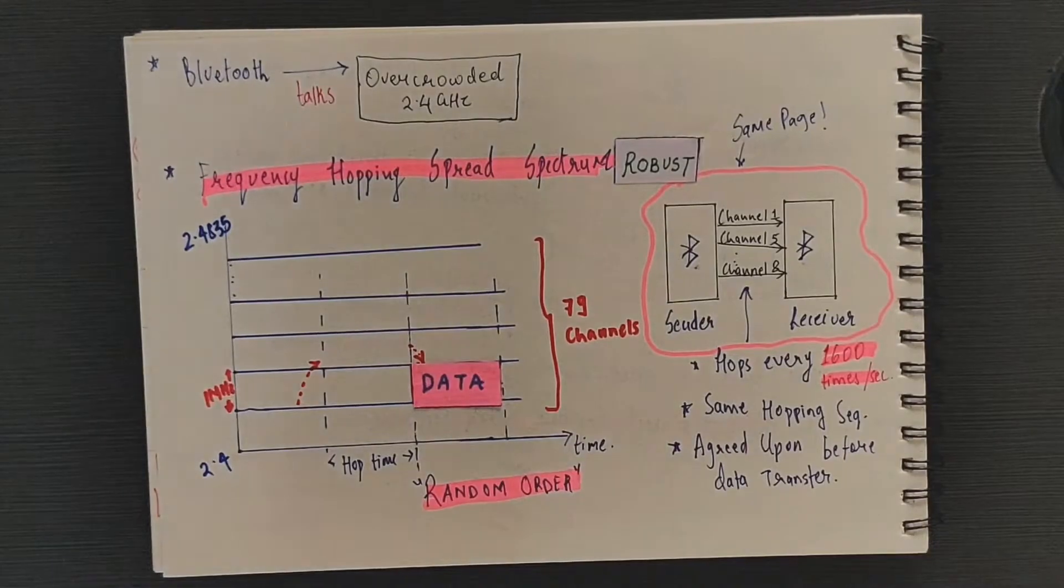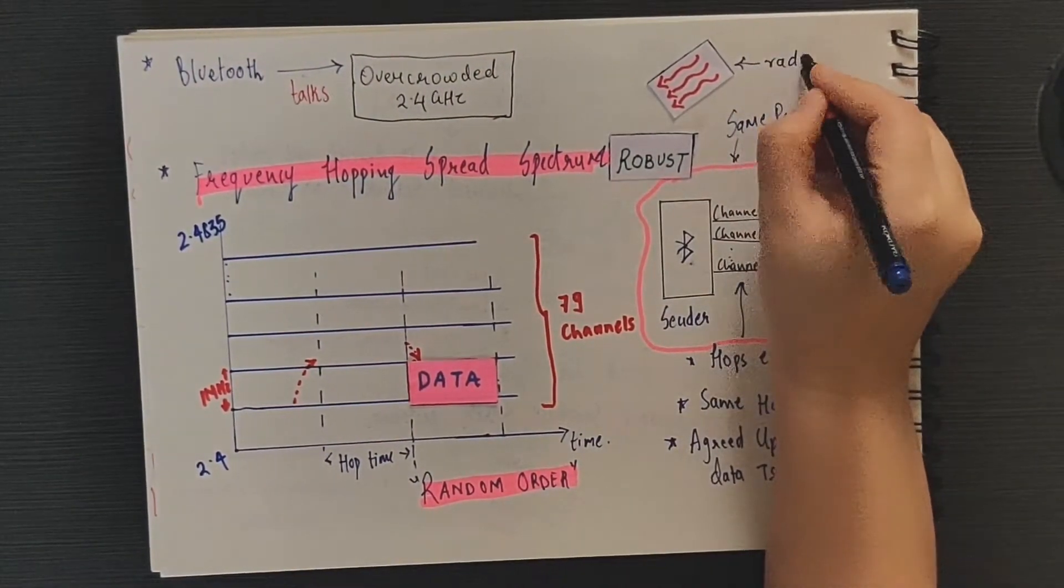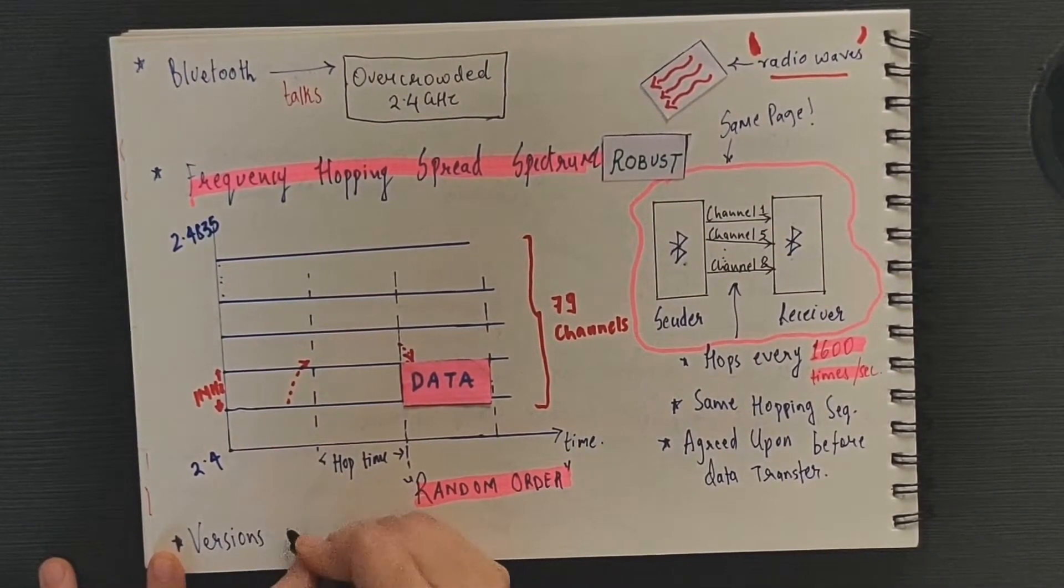This hopping around makes Bluetooth more robust to interferences from nearby sources of evil radio waves, and allows Bluetooth networks to coexist in the same place.